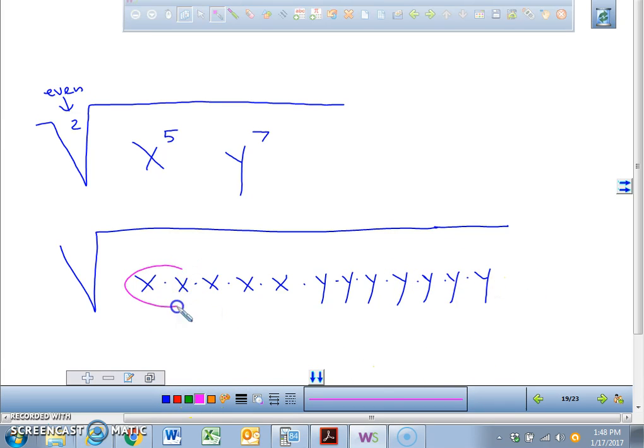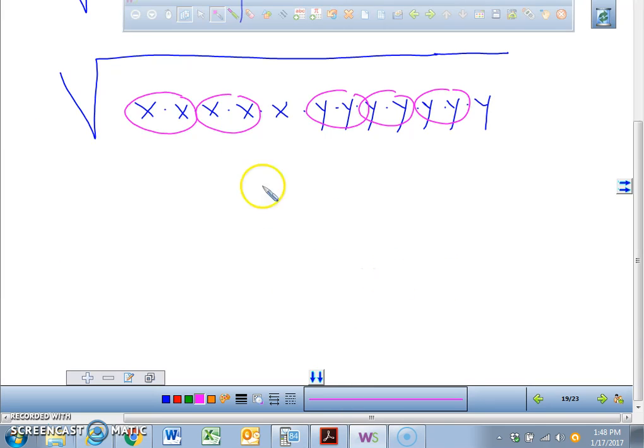And what do square roots look for? Groups of two. One, two, three. Alright. So we can pull out, how many x's can we pull out? We can pull out an x here and an x here. What is x times x? x squared. We can pull out a y, pull out another y, pull out another y, pull out another y. What's y times y times y times y? y cubed.